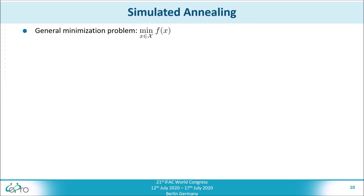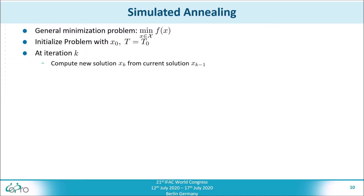Let's look at some details of the simulated annealing algorithm. Suppose we have a general minimization problem where we try to minimize a function f of x. We initialize the problem with an initial solution x₀ and an initial temperature t₀. Then, at each iteration step k, we first compute the new solution xₖ from the current solution xₖ₋₁.